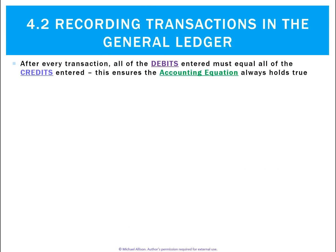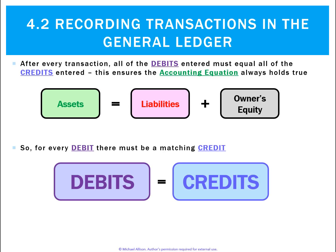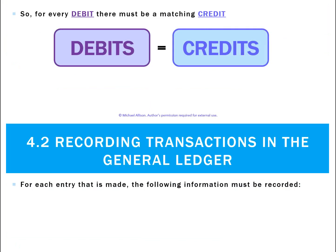All of the debits and all of the credits equalling will ensure that the accounting equation is always true. We always want assets to equal liabilities plus owner's equity, and the way we do that is by making sure that for every transaction, there's always a matching amount of debits and credits.